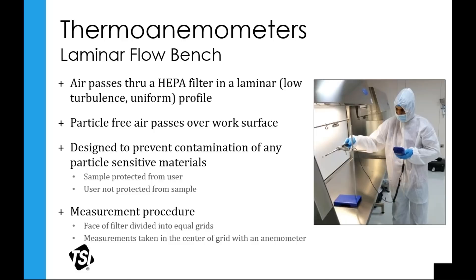Another application is laminar flow benches — basically a fan brings in room air, filters it, and that filtered air comes across the work environment for lower-level experiments and testing. Using a hot wire, you grid the area in front of the HEPA filter, take velocity measurements at each point, and come up with the average. Any difference in uniformity — where one side or corner has higher or lower velocity — can indicate dirt or debris filling that point of the filter, causing issues with the uniformity of airflow velocity coming across the clean bench.